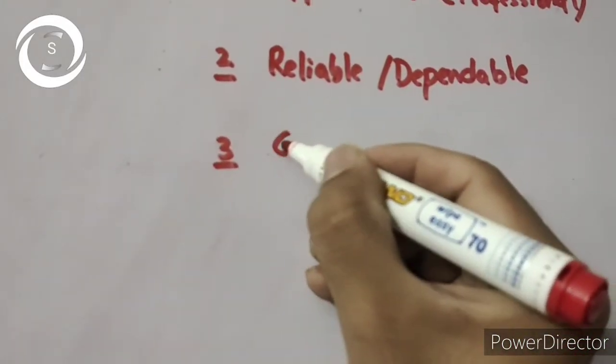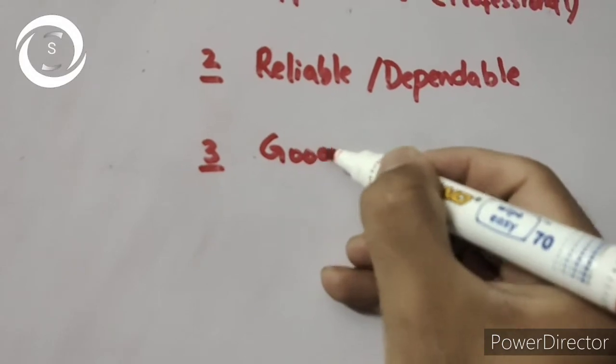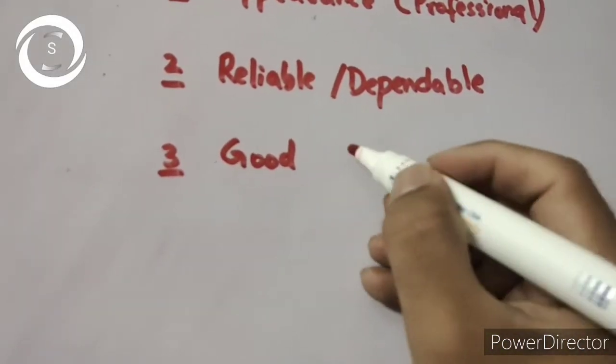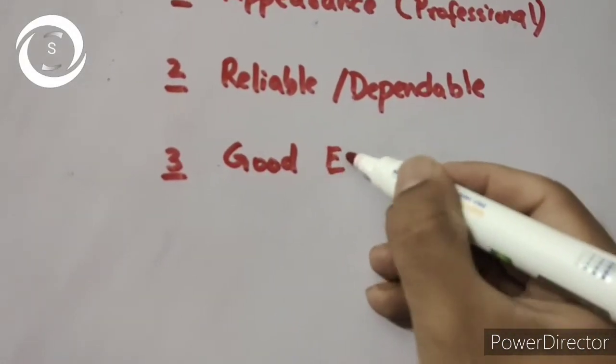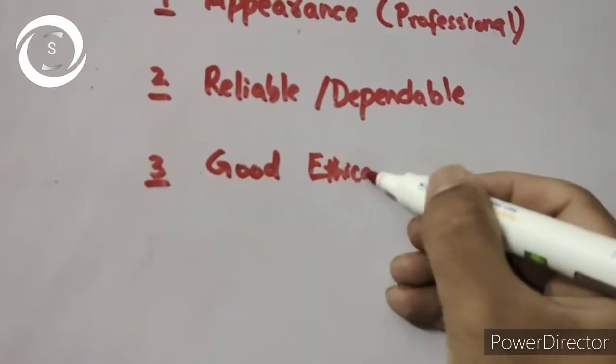Number three is ethical behavior. Honesty, sincerity, and open disclosure are characteristics of ethical behavior. They should be ethically strong and morally strong.